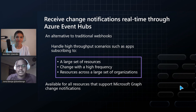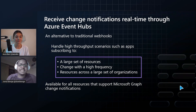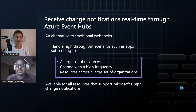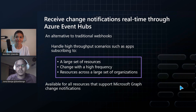So what kind of scenarios are best for change notifications and Event Hubs? When you have large datasets, when you have a large pool of resources that you want to get notified about, this is the best approach — you can take advantage of Event Hubs. Also, when you have a high frequency of notifications, maybe you're receiving notifications every millisecond, then probably this is the best option. And also when you have a large organization with multi-tenants and applications across several services and you want to get notified whenever there's a change, this is a great way to go.